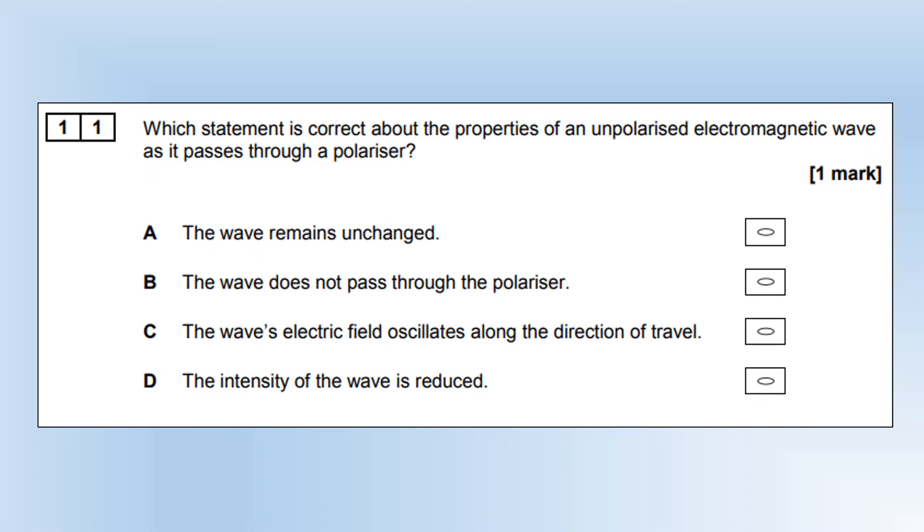Which statement is correct about properties of unpolarised electromagnetic wave as it passes through a polariser? The wave range isn't changed. No, it gets polarised. It doesn't pass through, some of it will. The electric field oscillates along the direction of travel. No, it's perpendicular. So the intensity is reduced, yes, because some of the planes of polarisation get filtered out.